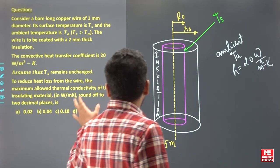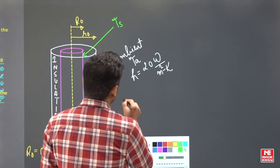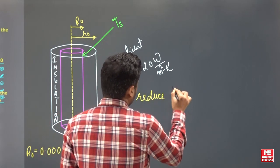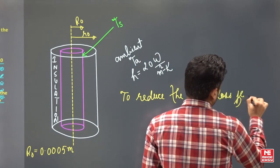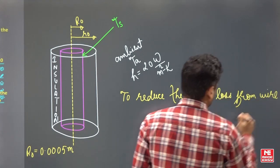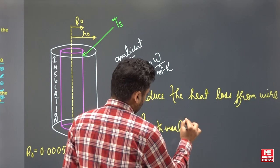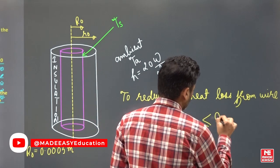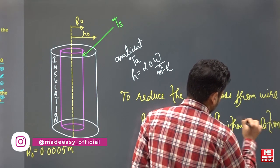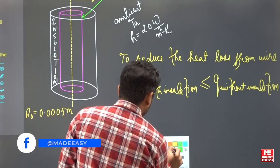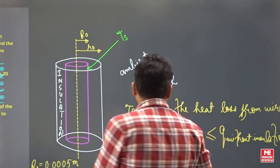Now to reduce the heat loss from the wire, the maximum allowed thermal conductivity of the insulation material, round off to two decimal places. So to reduce the heat loss from wire, q with insulation should be less than equal to q without insulation.